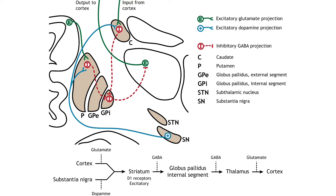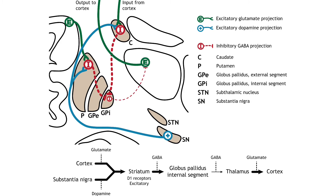When input from either the cortex or substantia nigra increases in intensity, the direct pathway is activated. The neurons in the striatum involved in the direct pathway express the D1 metabotropic dopamine receptor, and the activation of this receptor is excitatory. Therefore, projections from both the cortex and the substantia nigra activate the neurons in the striatum. The striatal neurons are inhibitory and release GABA onto the internal segment of the globus pallidus, inhibiting this region. The neurons in the internal segment of the globus pallidus are also inhibitory, releasing GABA onto the thalamus. Activation of the striatal neurons inhibits the neurons in the internal segment of the globus pallidus, releasing the inhibition on the thalamus. Inhibition of an inhibitory region is called disinhibition. Therefore, activation of the direct pathway results in increased output from the thalamus because it is disinhibited.